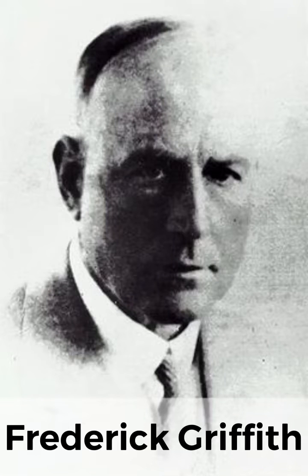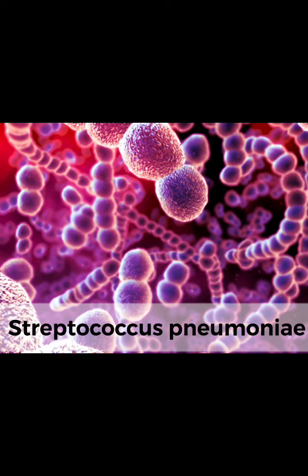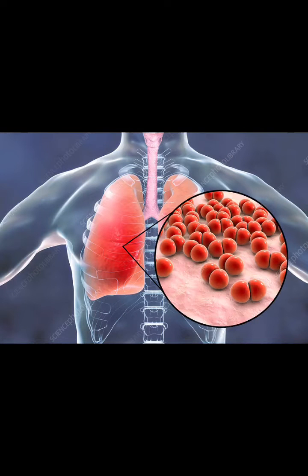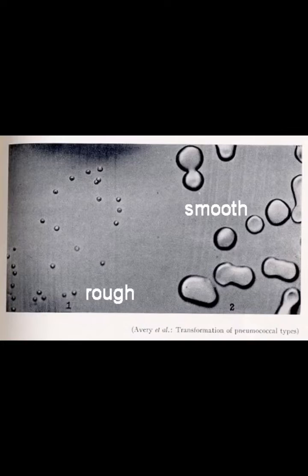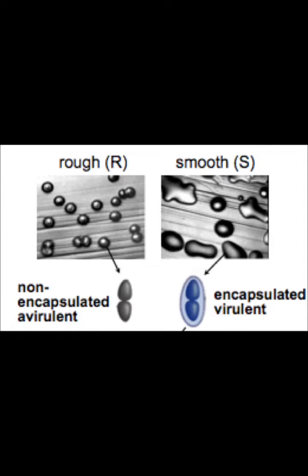In 1928, Frederick Griffith was working on Streptococcus pneumoniae, which causes the disease pneumonia. He established the transforming principle by performing experiments on two strains of Streptococcus pneumoniae: the R-strain, which is the non-virulent strain, and the S-strain, which is the virulent strain.